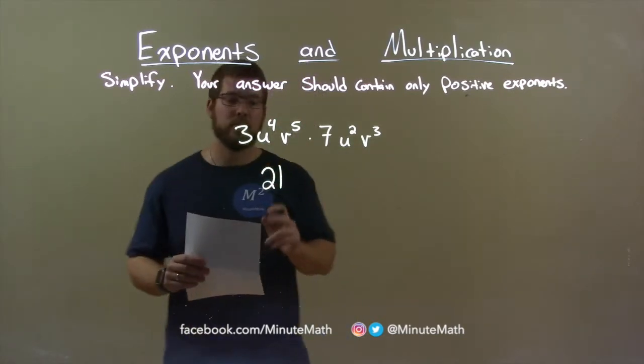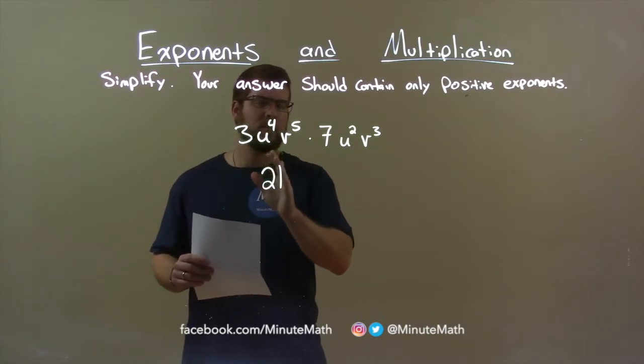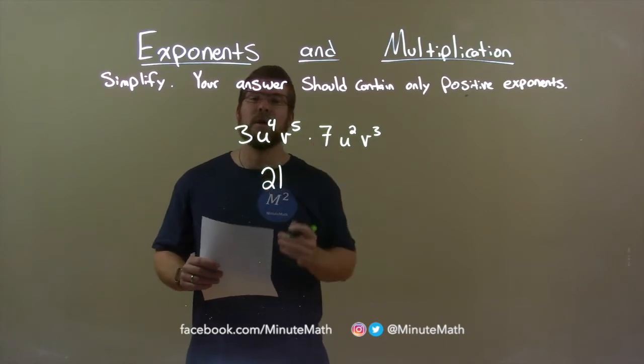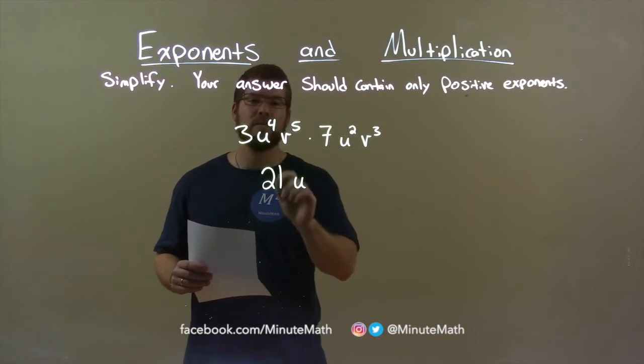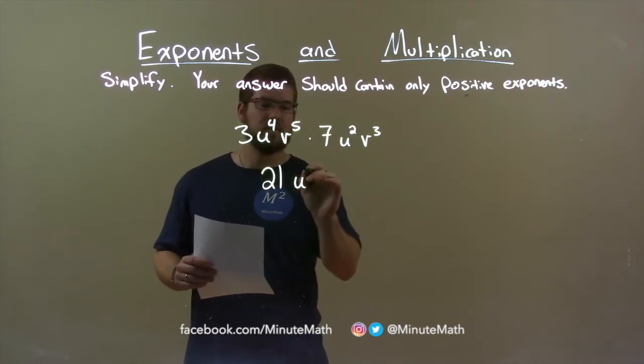Now the variables. u is the first one I see and we multiply variables only by their like terms, or like variables. So u's get multiplied to u's. And when we do that, u to the 4th times u squared comes out to be, well we add the exponents when it's multiplication, 4 plus 2 is 6.